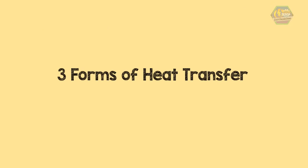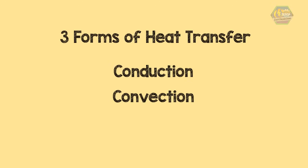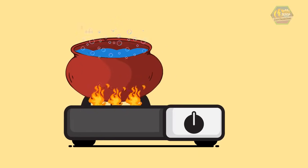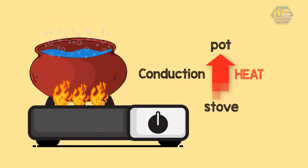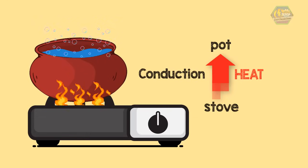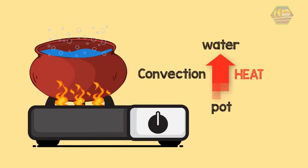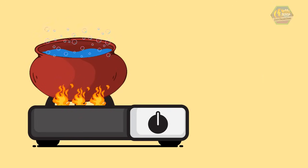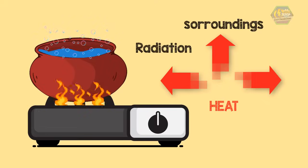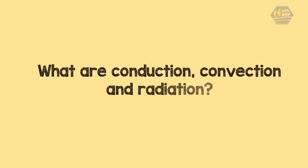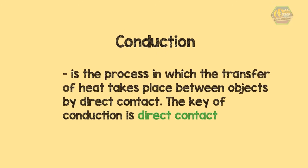There are three forms of heat transfer: conduction, convection, and radiation. When heating a pot full of water, all three forms of heat transfer are taking place. Conduction takes place with the transfer of heat from the stove to the pot, the water boils by the process of convection, and the heat from the flame radiates in all directions.